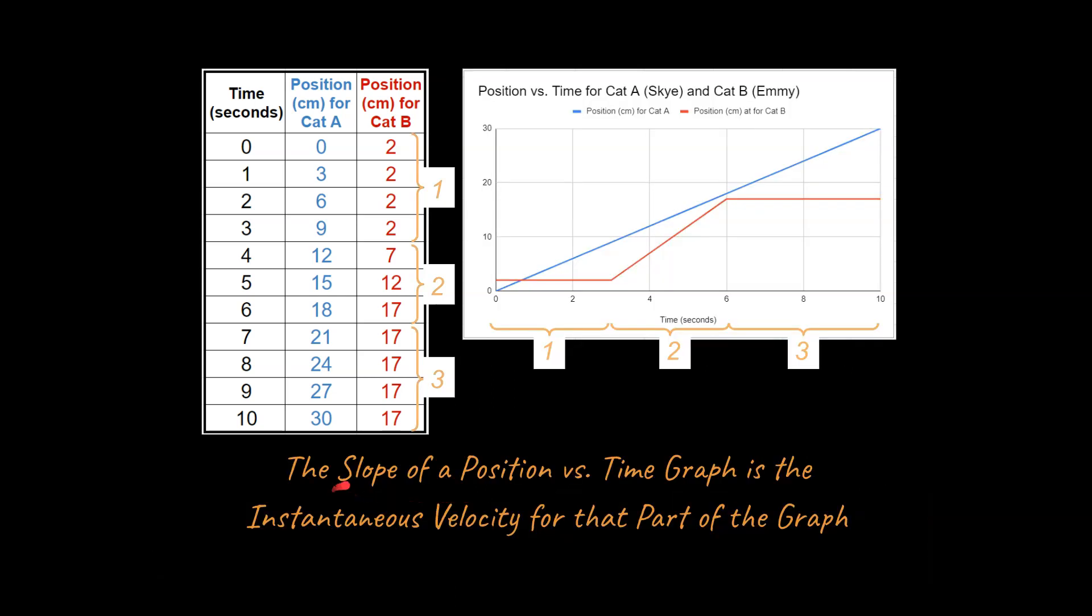And so I do want to conclude with the main idea here. There really is just one main idea in this lesson, and that is this: the slope of a position versus time graph is the instantaneous velocity for that part of the graph. So the slope of this line will tell us the velocity at any point along this line, and that's true for any of the lines that you see here. That's true for any position versus time graph. Next up, we're going to be talking about average acceleration. Hopefully this lesson has been helpful. Thank you for listening. If you have a comment, please throw one down below, and I hope you have a great day.